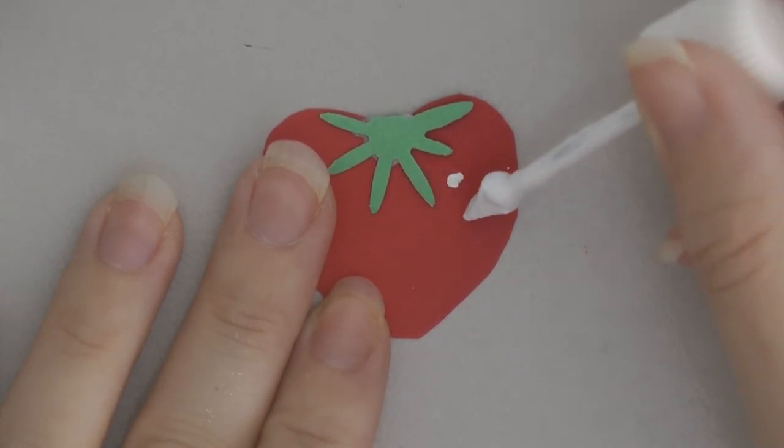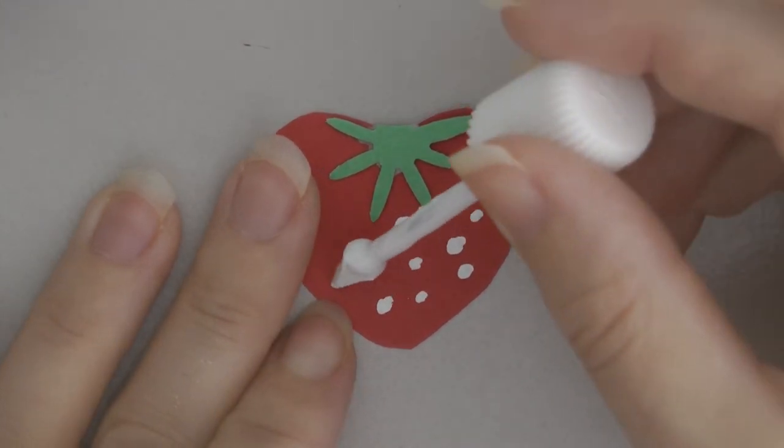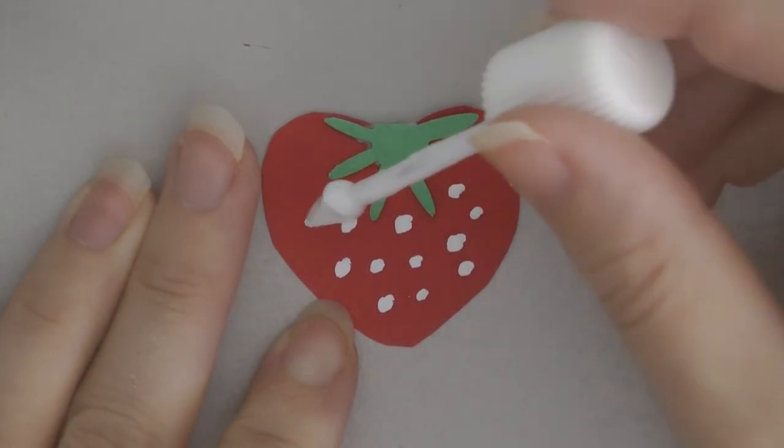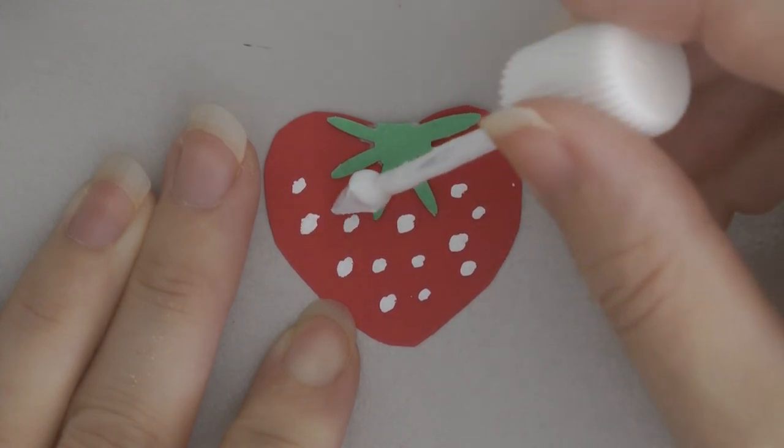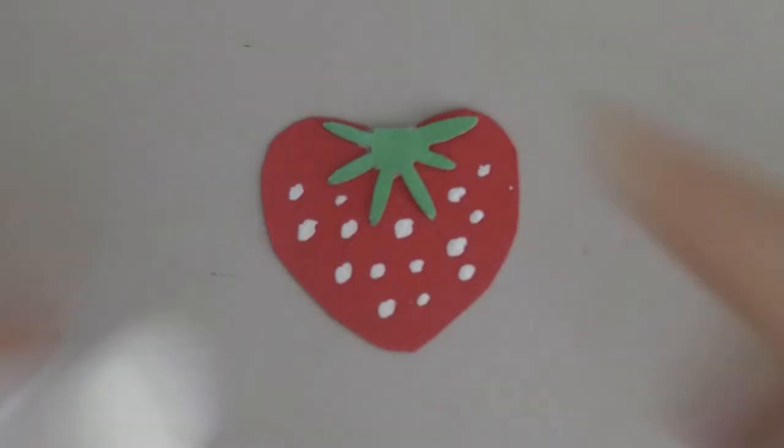But all I have on hand is white-out, so that's what I am going to use. Put cute little dots in random positions, and you have one strawberry.